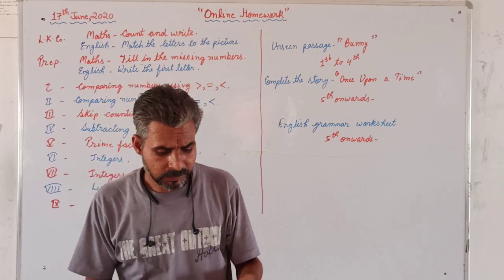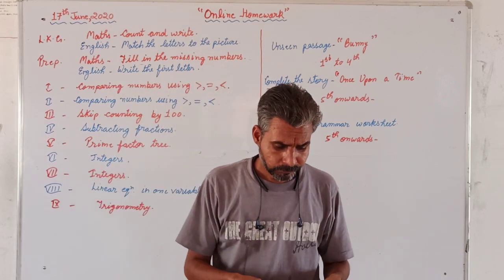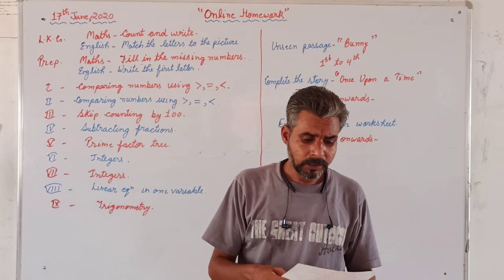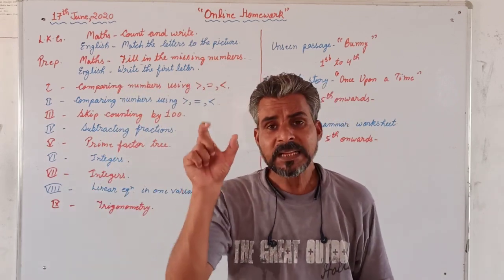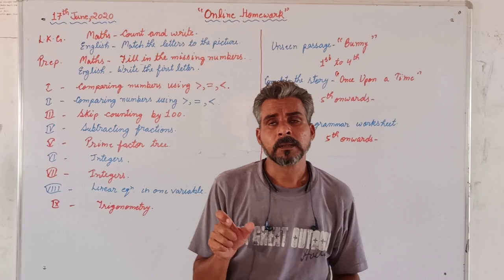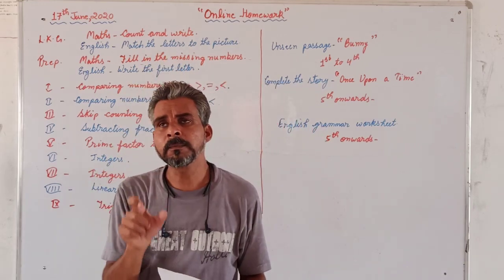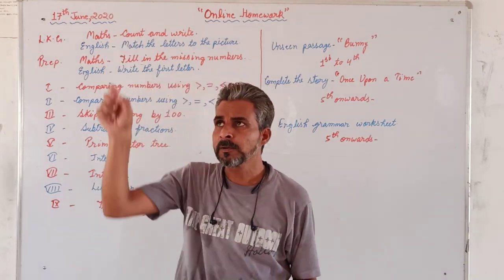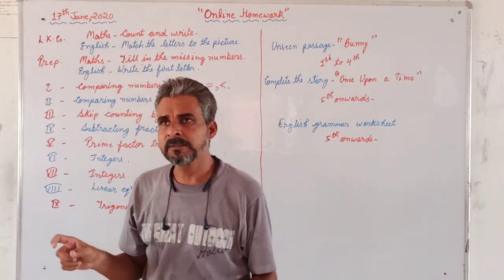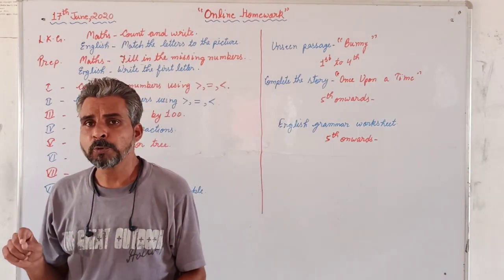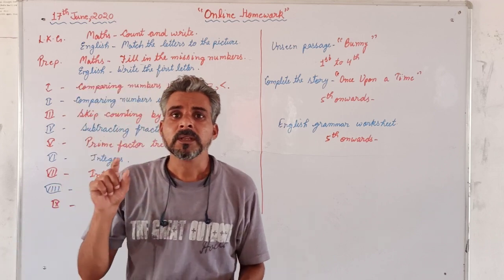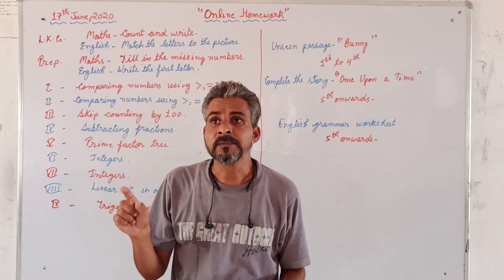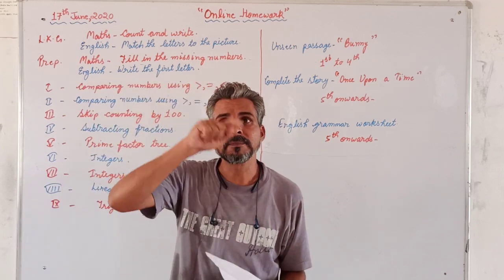In the English worksheet, you have to match the following. In one column, alphabets are written. In the other column, pictures are given. You are supposed to match the picture with the starting letter.